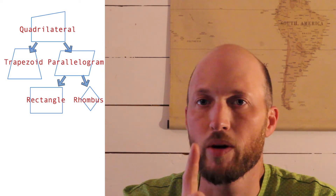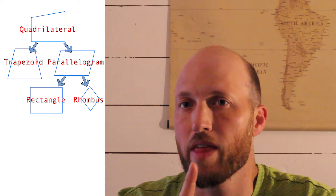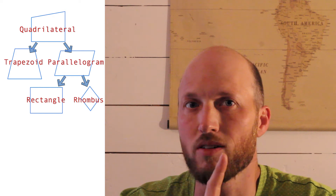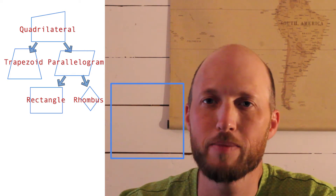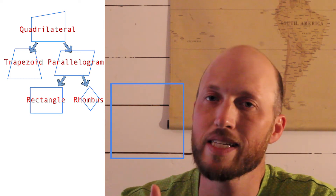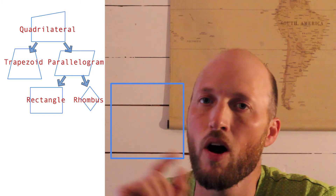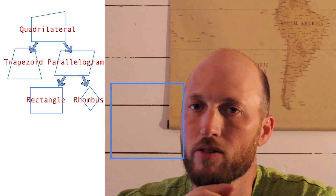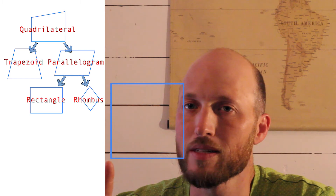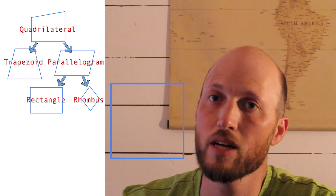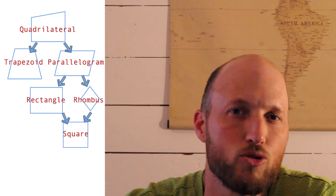We have a special case where a shape is both a rhombus and a rectangle. What shape has four sides all the same length and all angles at 90 degrees? A square! A square is a special type of rhombus because all sides are the same length, and a special type of rectangle because all angles are 90 degrees. It's also a parallelogram because opposite sides are parallel, and a quadrilateral because it has four sides. We can put that in our diagram.